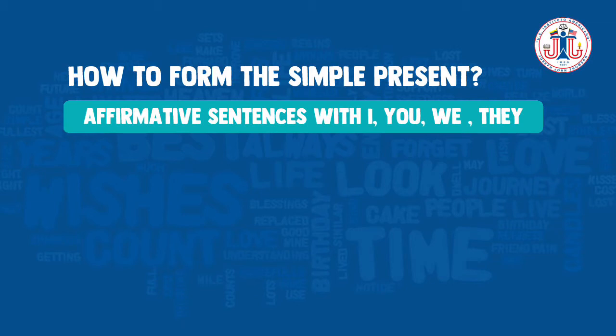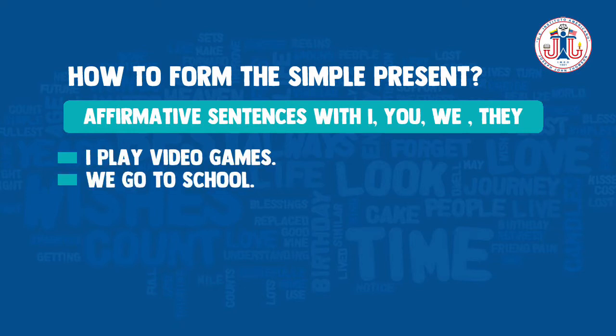Affirmative sentences with I, you, we, or they. In this case, you need the subject plus the base form of the verb plus the complement. For example, 'I play video games' or 'we go to school.'